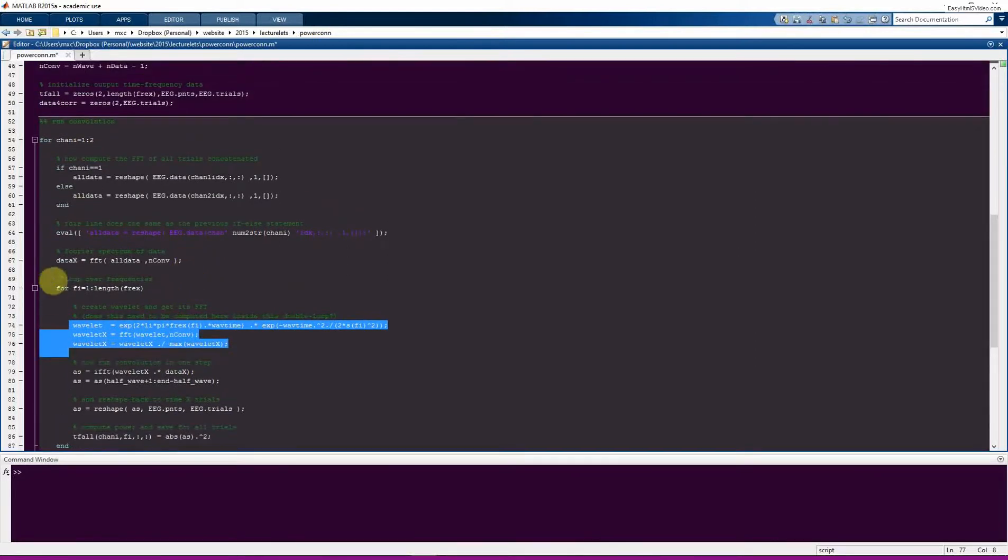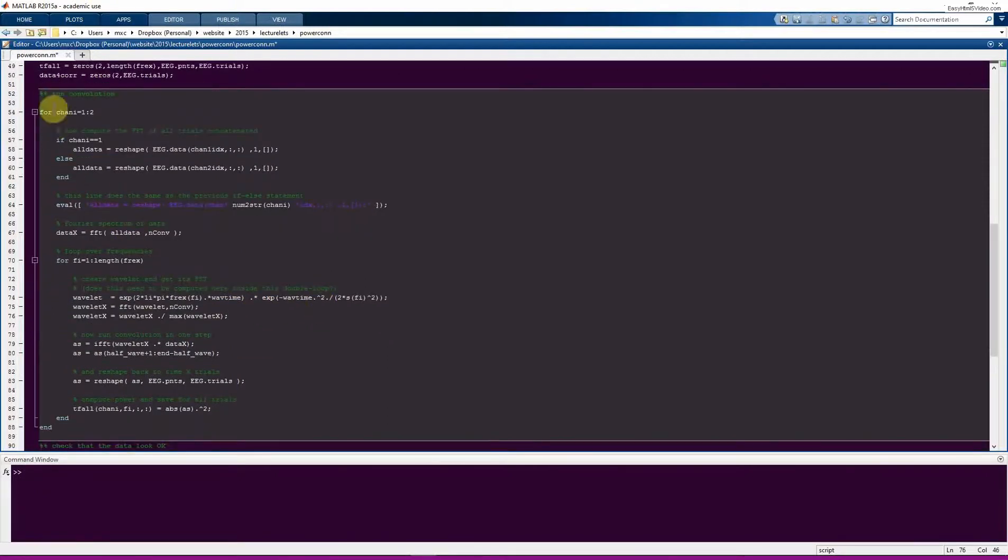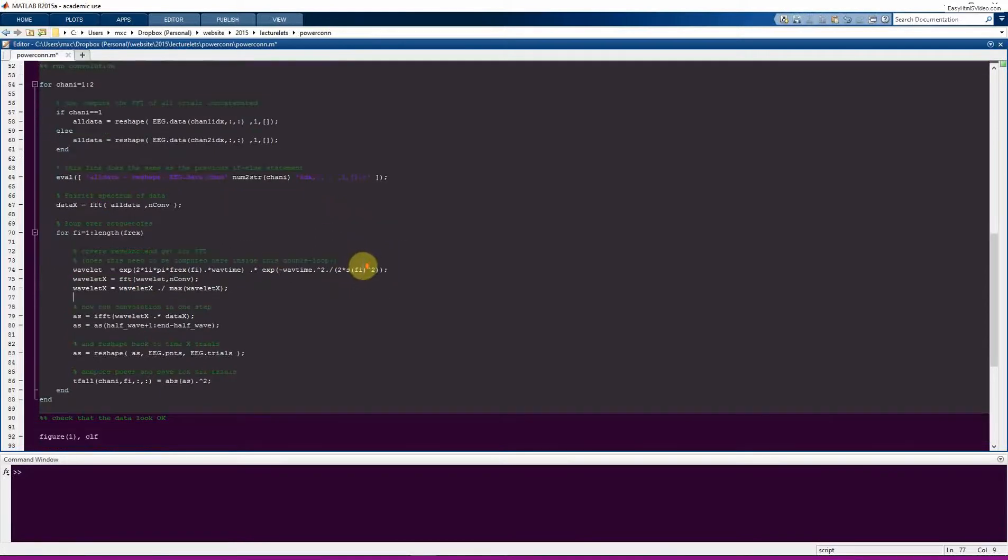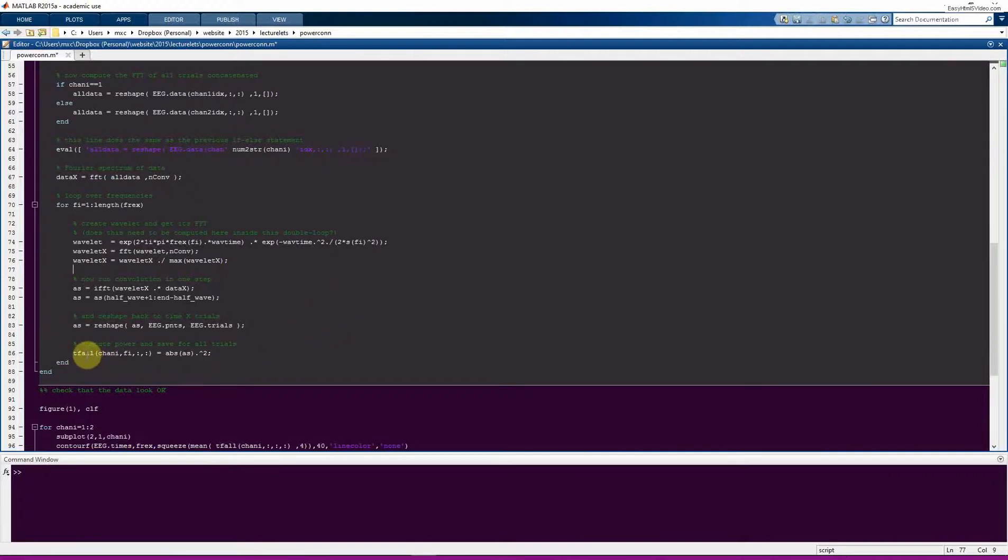So it is a little bit redundant to compute the wavelets inside this channel loop. So in theory, you could have another loop that goes over frequencies and have that outside here. And then create the wavelets and store the spectral representation of the wavelets. In this case, I didn't do that because there's only two channels. So if we had a loop over 100 channels, this would really add some computation time. And then I think I would make this a separate loop. But just in this case, because we only have two channels, I thought it's better to make the code a little bit simpler, even though these things will be recreated once. So it doesn't really matter either way. But I think it's good to try to think about these issues all the time. Does this code need to be inside this loop here?